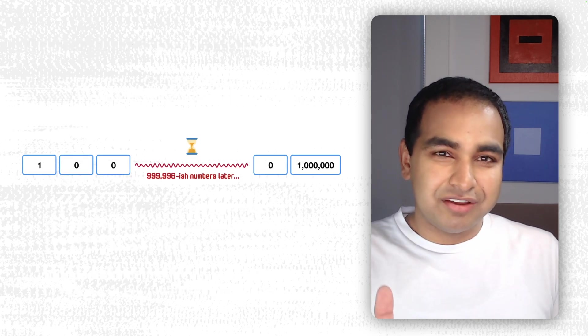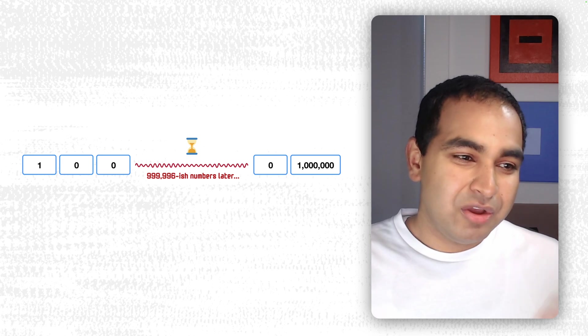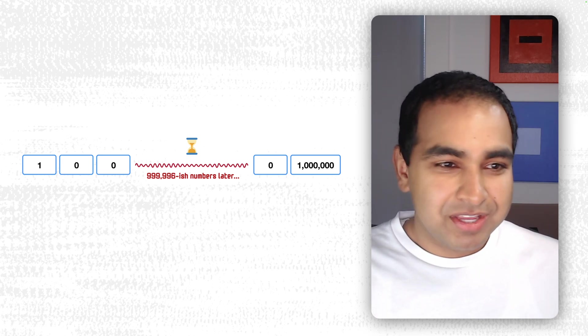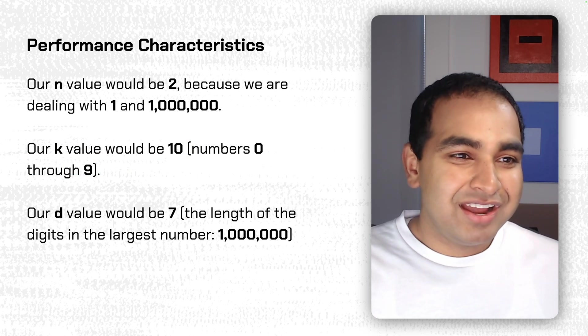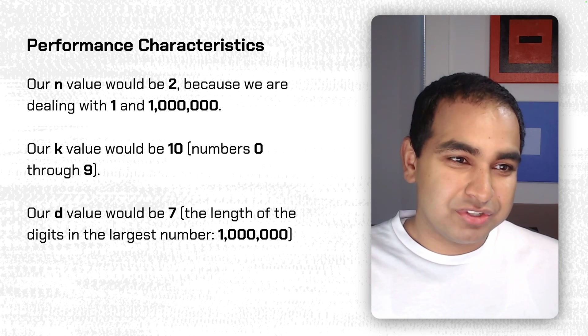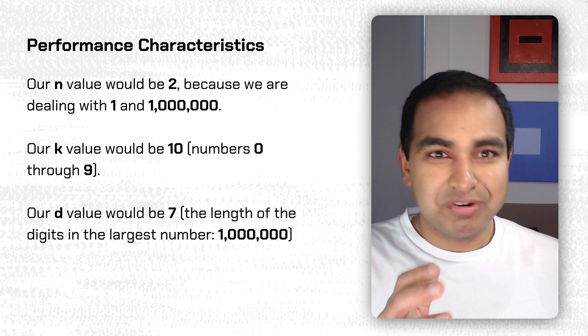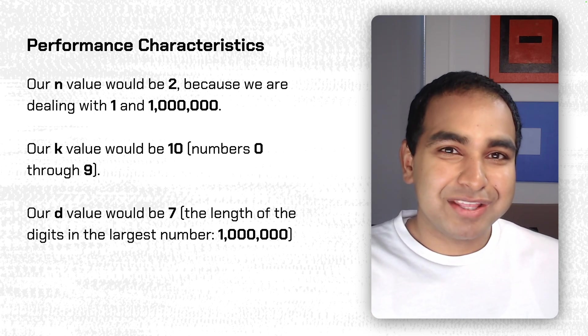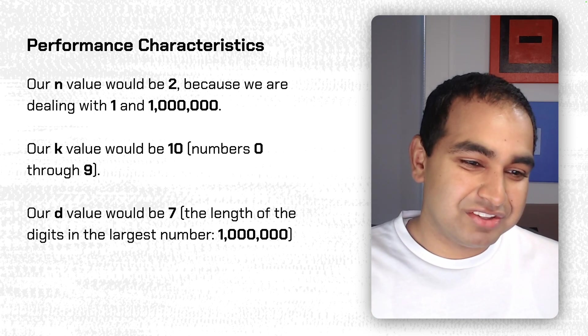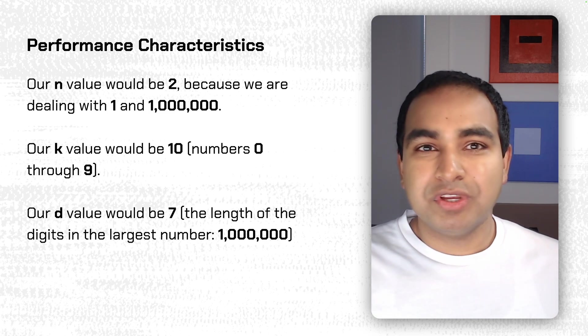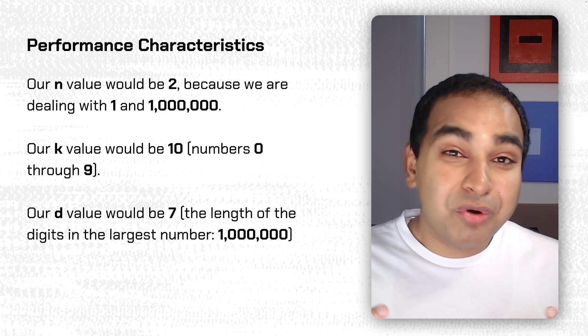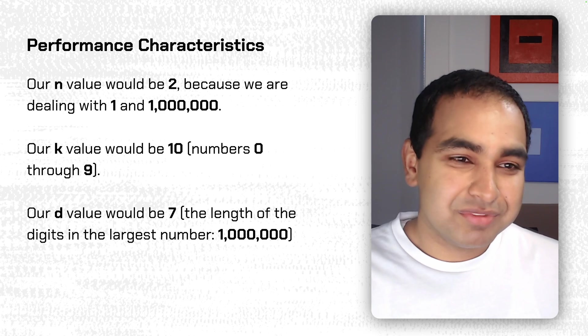So when we have to think about the earlier problem where we're sorting two values, 1 through 1 million, with our Radix Sort, our N value would be 2, because we're dealing with just 1 and 1 million, two values. Our K value would be 10, numbers 0 through 9. And our D value would be 7, the length of the digits in the largest number, which is very nice, because at no point are we going to be iterating through 1 million items.